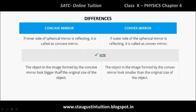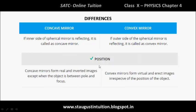The concave image is bigger than the original size of the object, whereas the convex image is smaller than the original size of the object. The main difference is in the position and size of the image formed. We will discuss the different image positions in the next video.